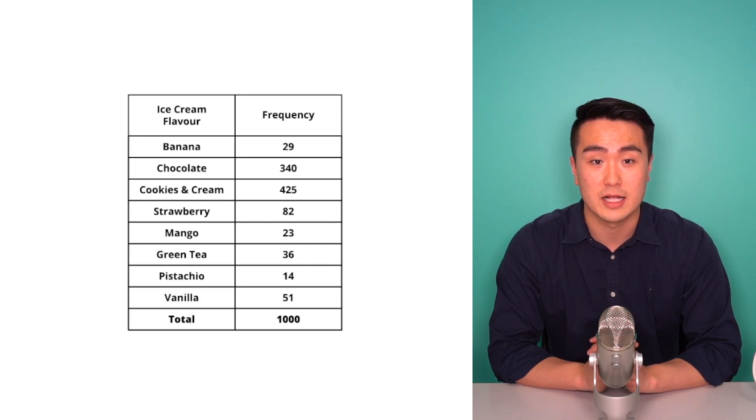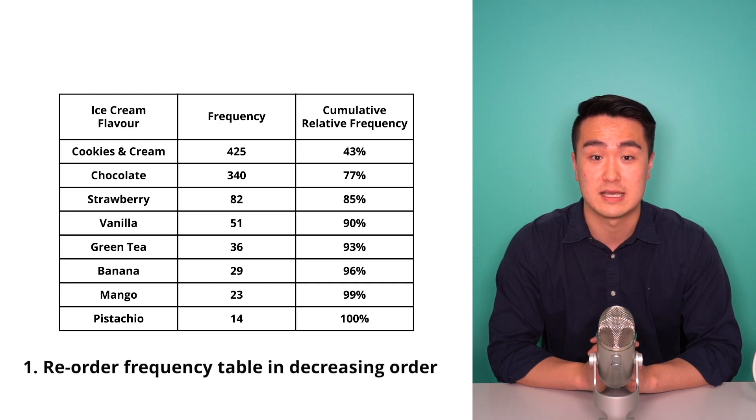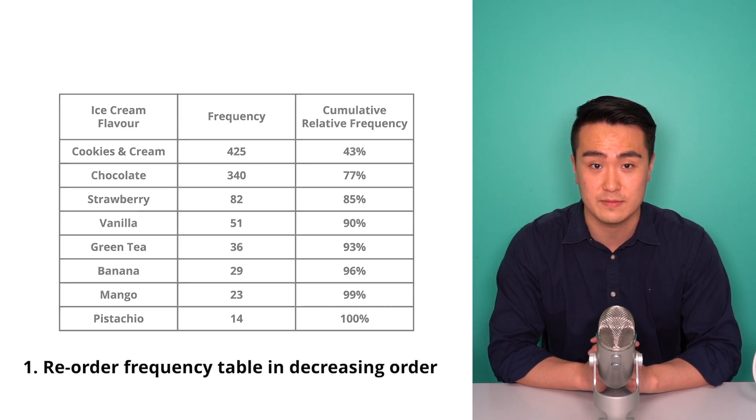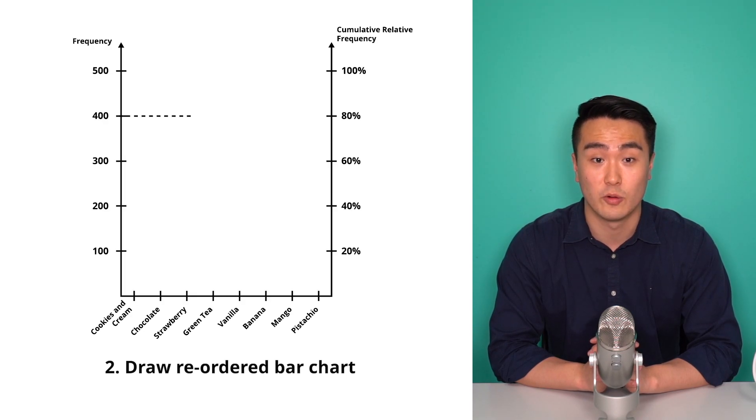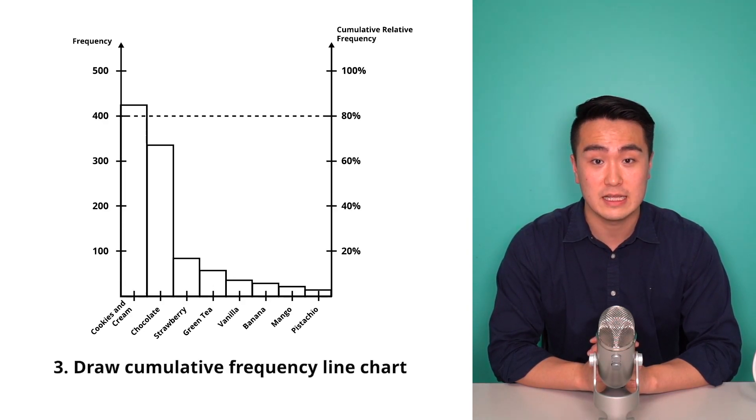A Pareto chart is simply a bar chart that reorders the frequencies or columns in descending order and then adds a cumulative frequency line chart on top of it. So we first reorder the frequency table so it's decreasing in frequency. Then we draw this reordered bar chart. Finally, we draw the cumulative frequency line chart. Note, it's not the standard frequency.